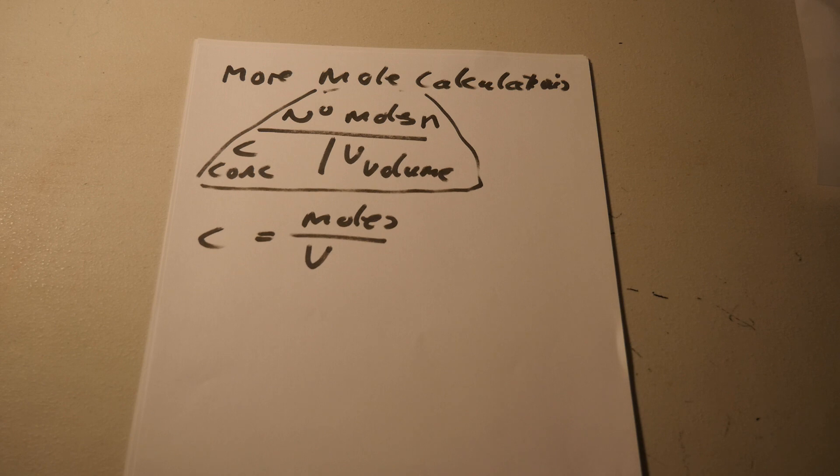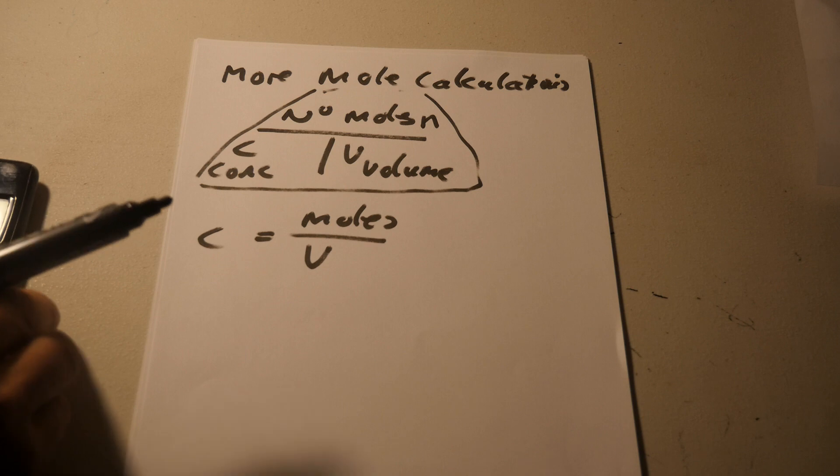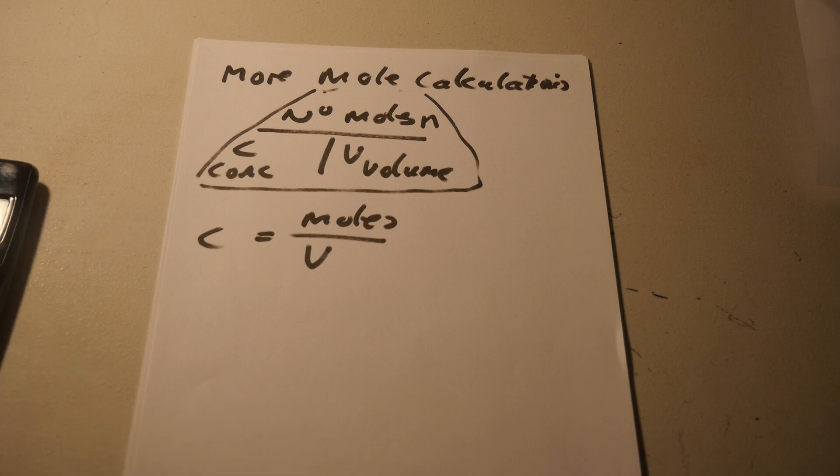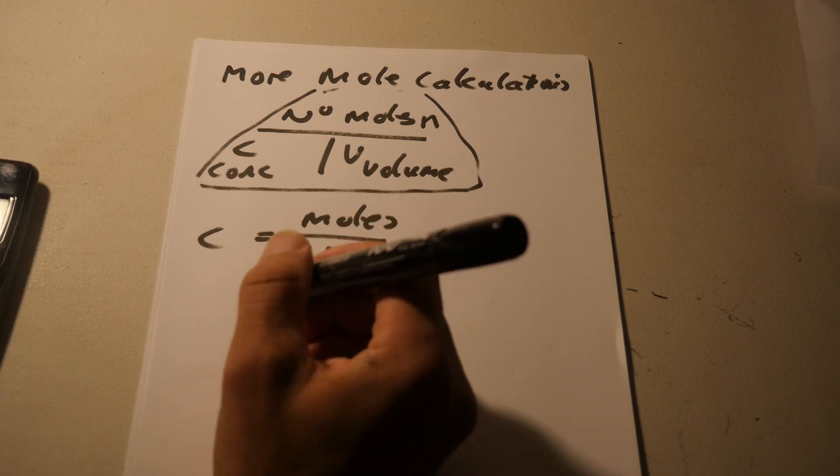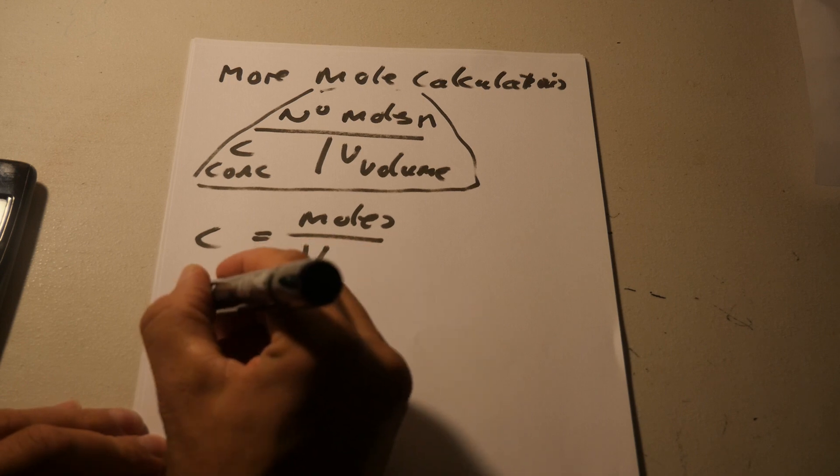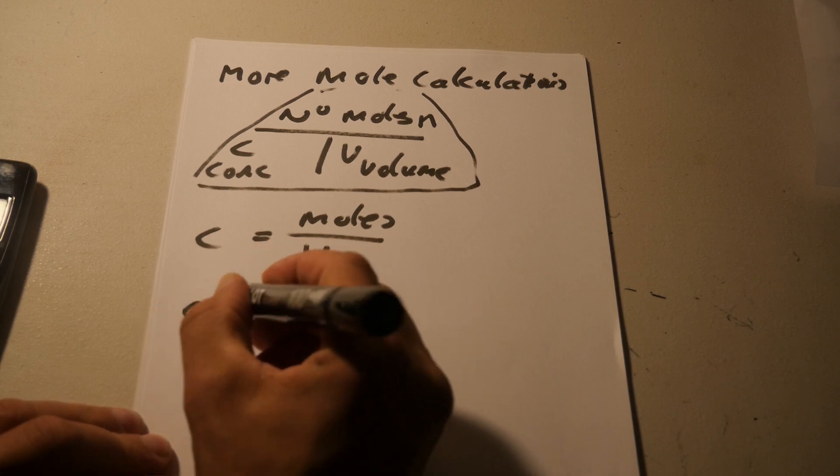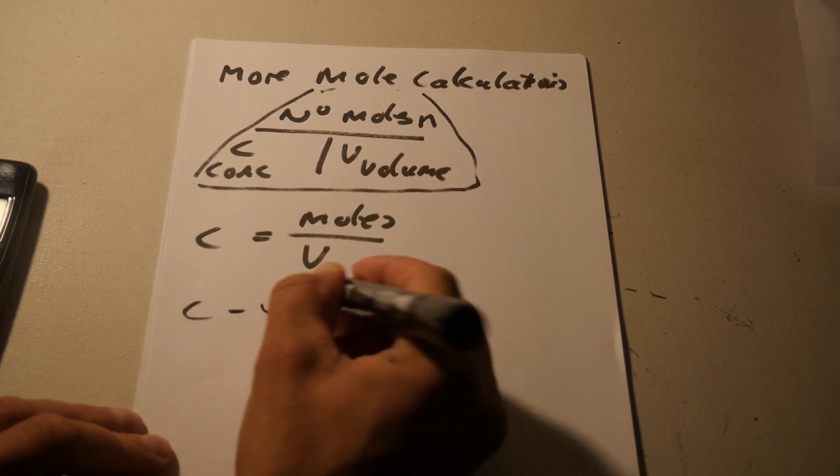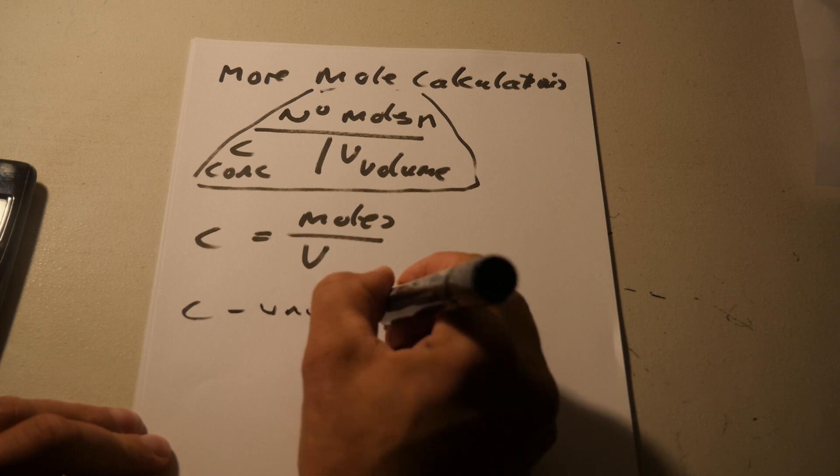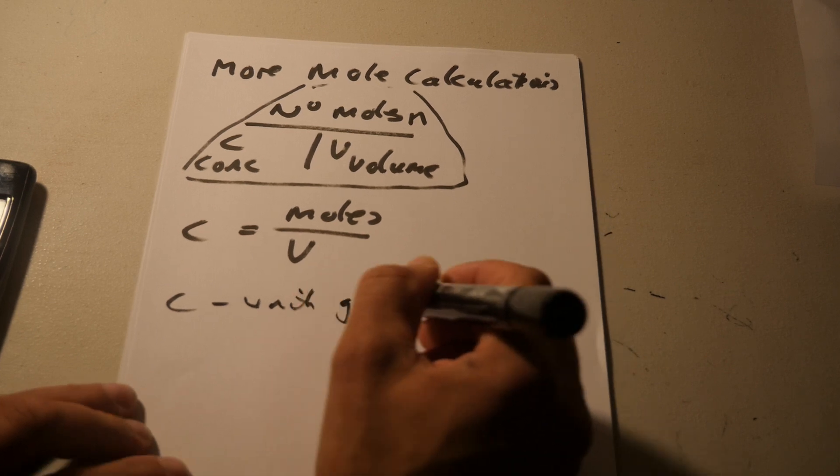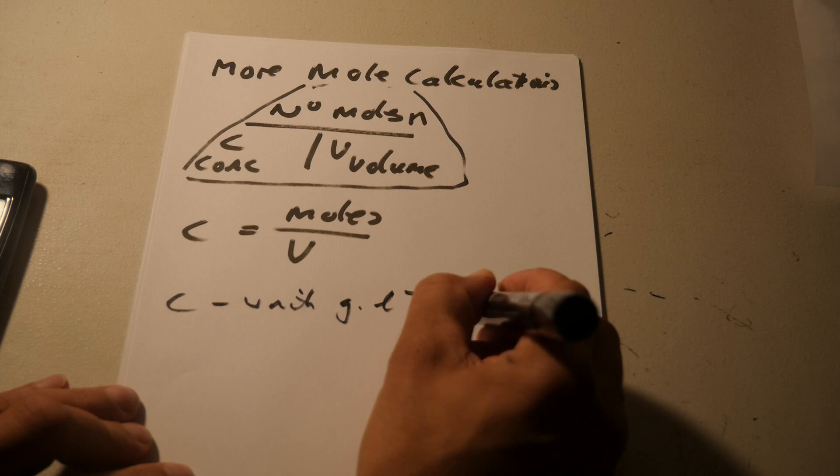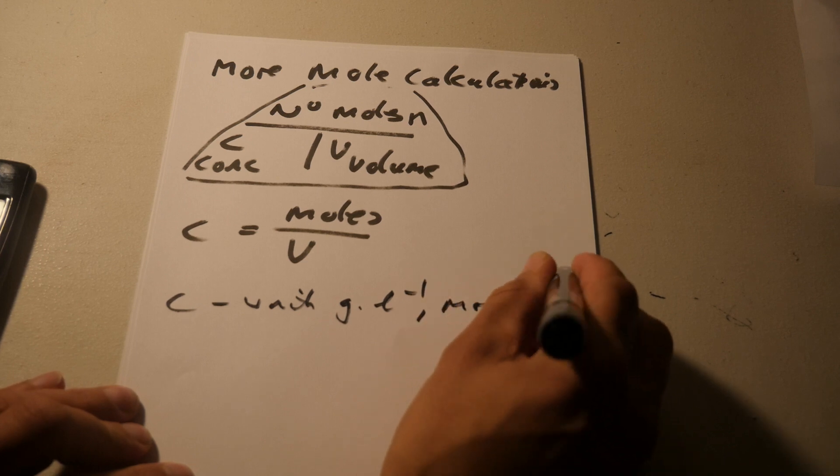The examples of this are if you take, let's see. If you take our, so yeah, concentration is normally given in units of a gram per liter or moles per liter.